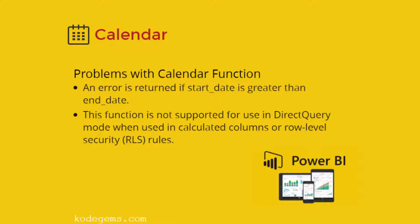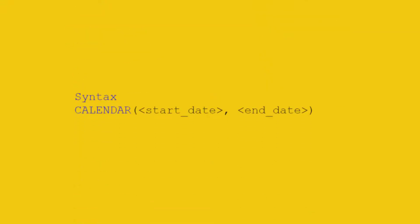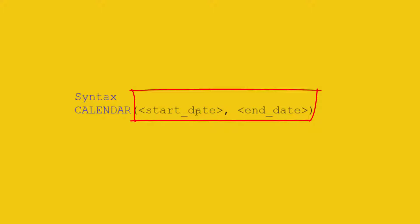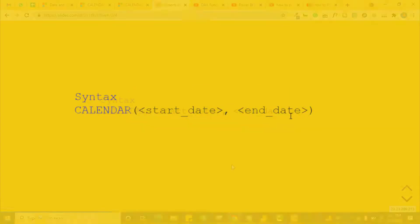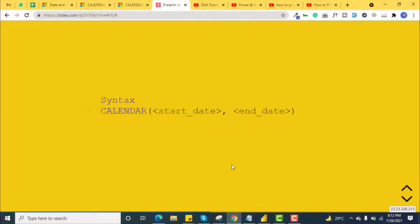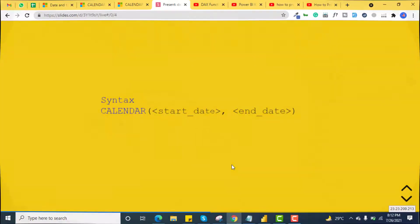Let's see the syntax. The CALENDAR function takes two arguments: the first argument is the start date and the second is the end date. Let's quickly see a practical demonstration of the CALENDAR function in Power BI.